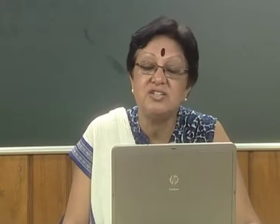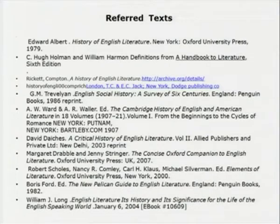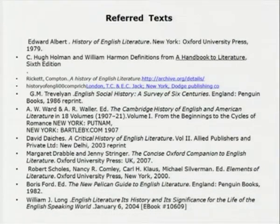I hope you have enjoyed this lecture. Next, we will go into the modernist period. Refer to the texts: Edward Albert, most of it has come from Compton Rickert, G. M. Trevelyan's English Social History: A Survey of Six Centuries — a necessary book which allows you to understand the social history of the time. David Daiches, A Critical History of English Literature, and William J. Long's English Literature: Its History and Its Significance. Thank you.